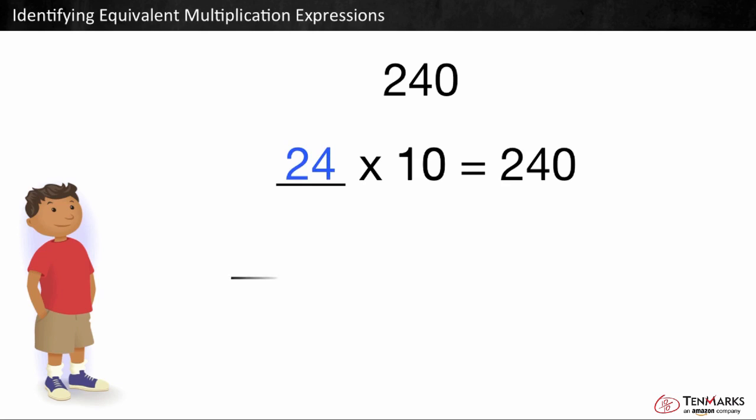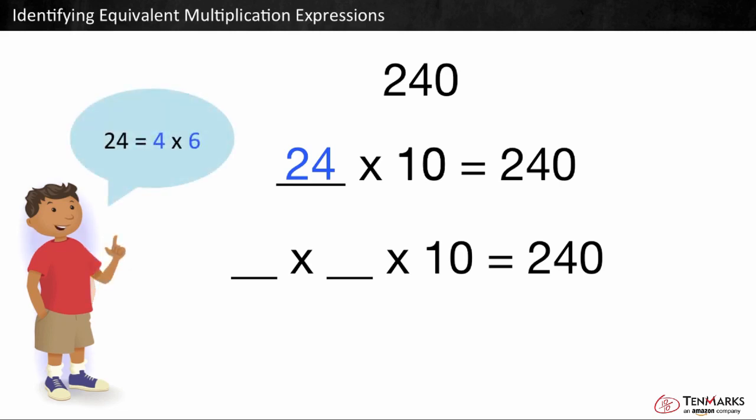Using this, we can write 240 as a product of three factors. We can break one of the original factors into two factors. One way is to break apart 24. 24 is the same as 4 times 6. 4 times 6 times 10 is equal to 240.